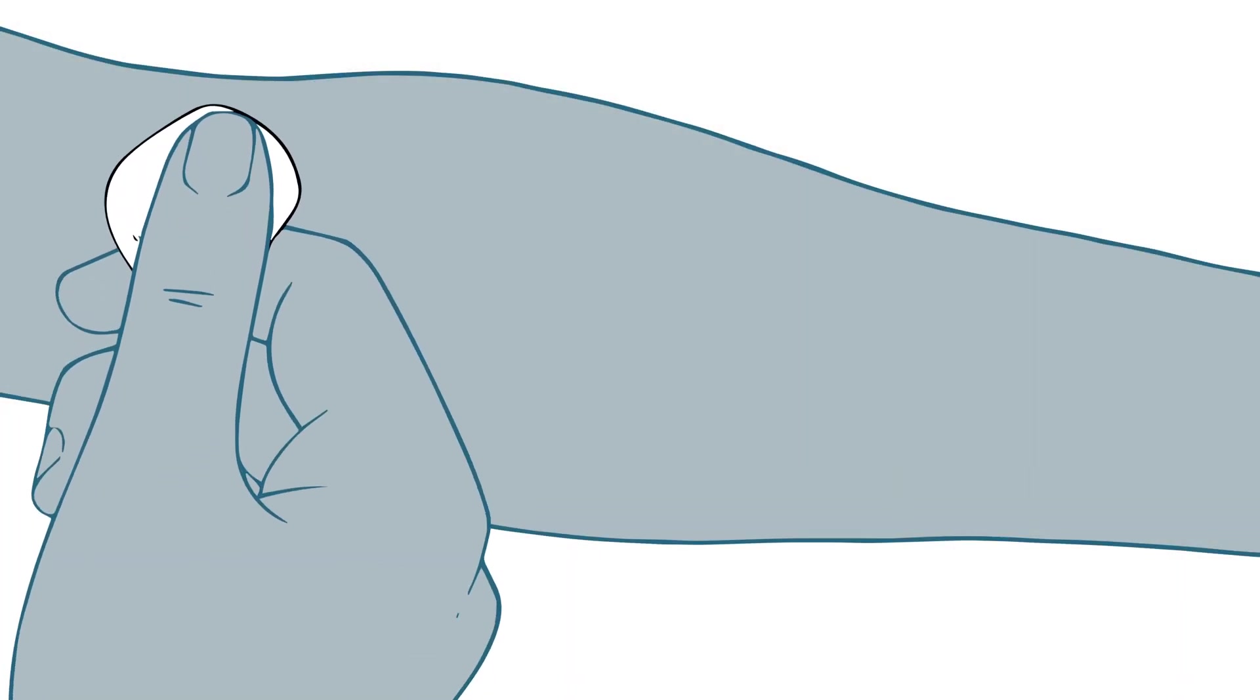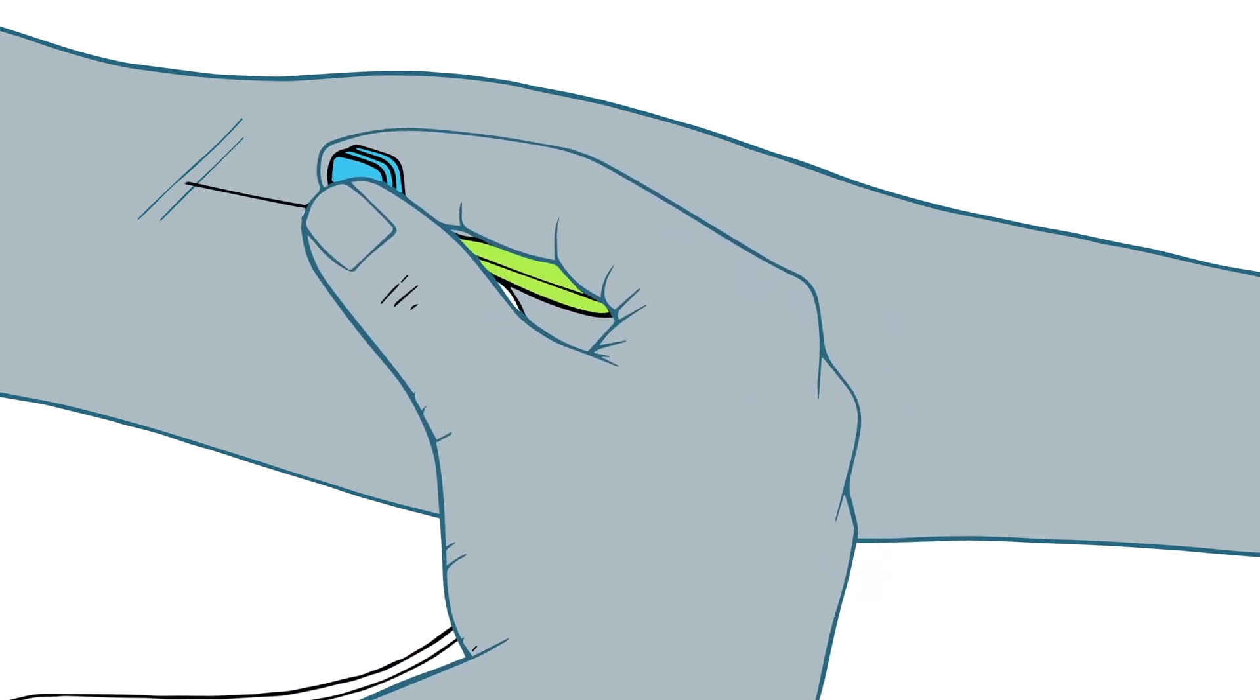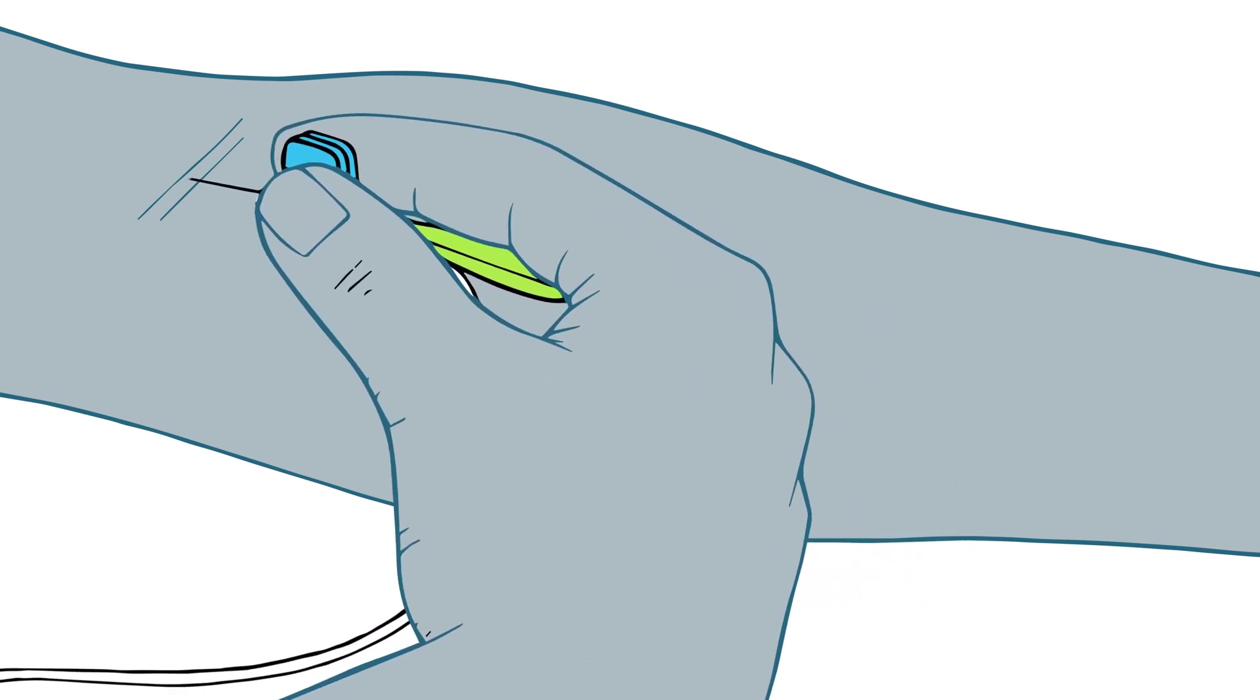There are treatments to make the blood clot more normally. Most are injected directly into the blood either to prevent bleeds from happening or to treat them once they've started.